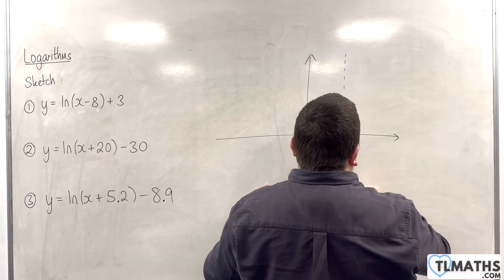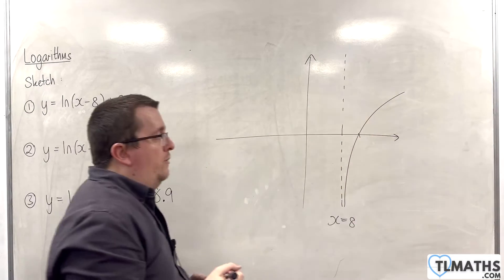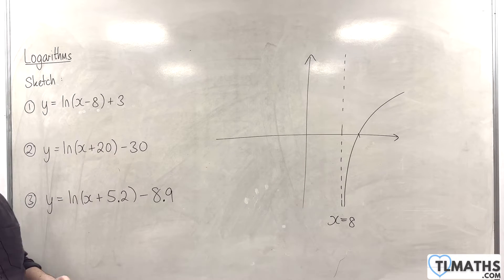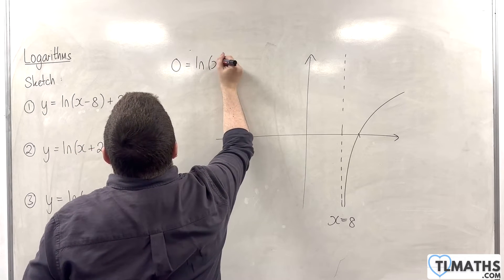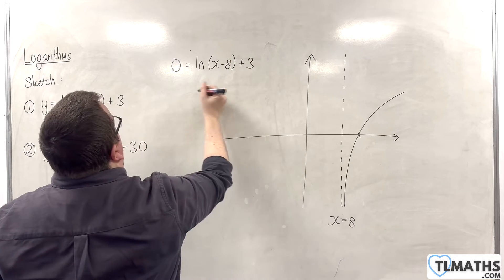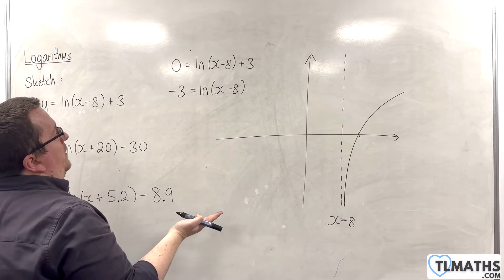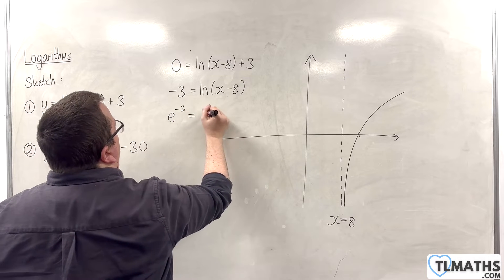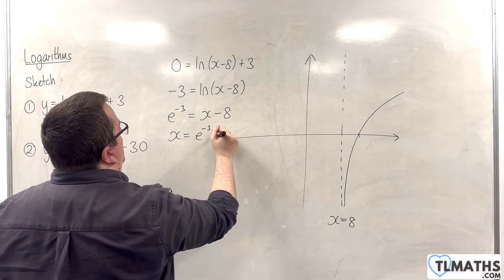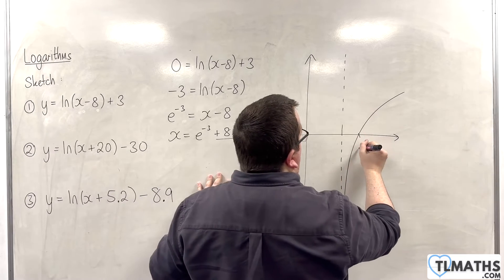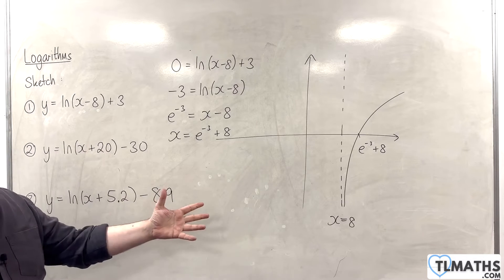Our logarithmic curve will look something like this. The only other point I'm interested in is where it crosses the x-axis, which is when y is 0. So if I put y to be 0, then we have 0 equals the natural log of x take away 8 plus 3. Subtract 3 from both sides, then e both sides. So e to the power of minus 3 is going to be x take away 8, and so x will be equal to e to the power of minus 3 plus 8. That is the exact point at which the curve will cross the x-axis. And that's my sketch for number 1.